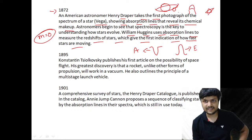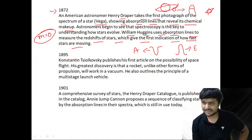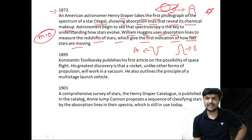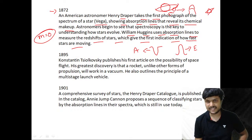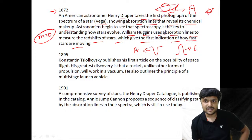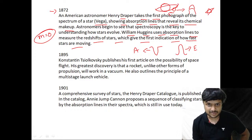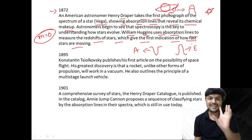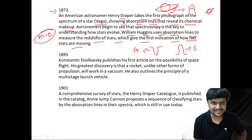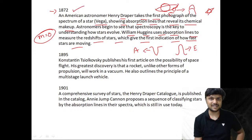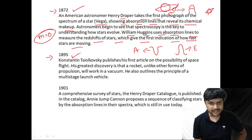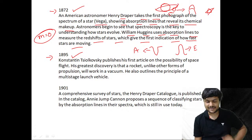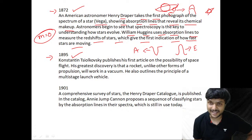If the planet is coming towards you it is blue-shifted; if it is going away from you the spectral lines are red-shifted. William Huggins used these absorption lines to measure the redshift of stars, giving the first indication of how fast they are moving. This all happened in the year 1872.